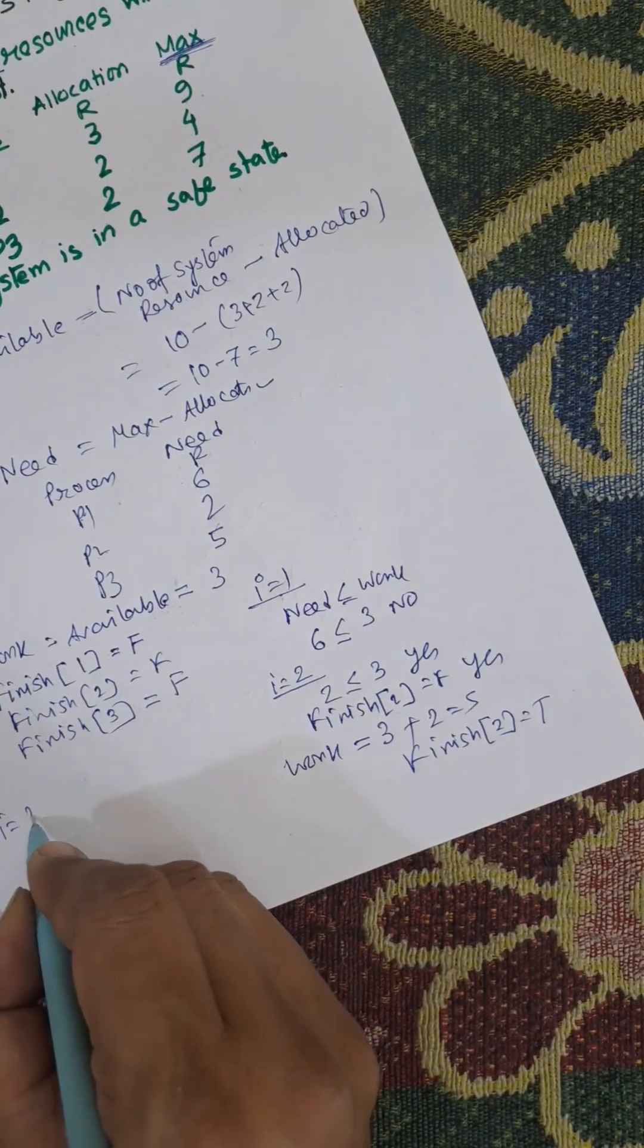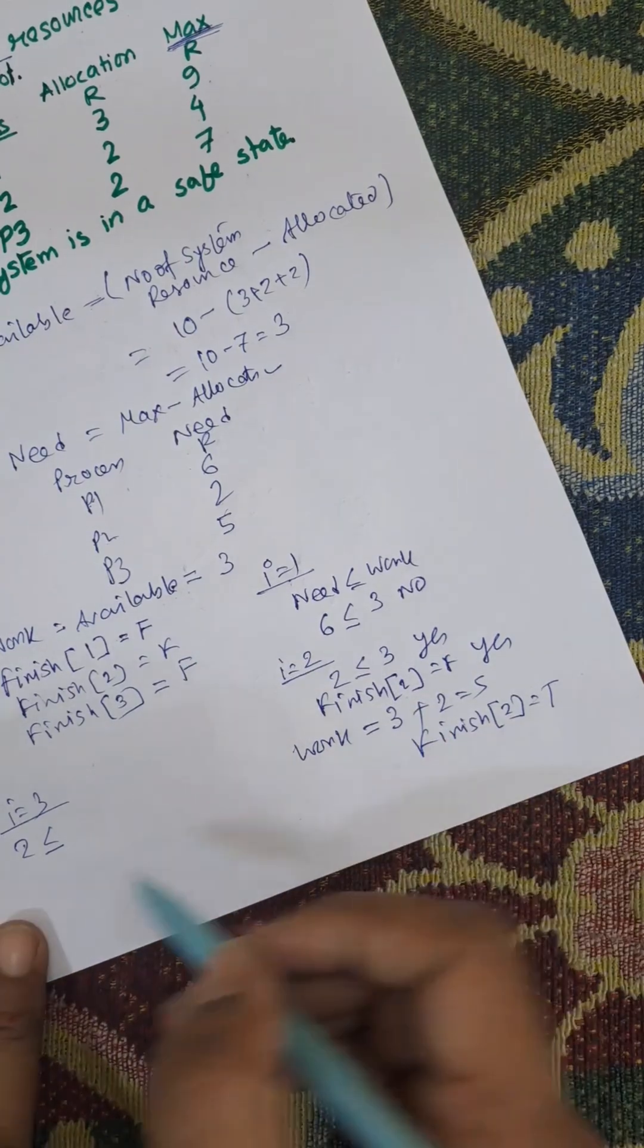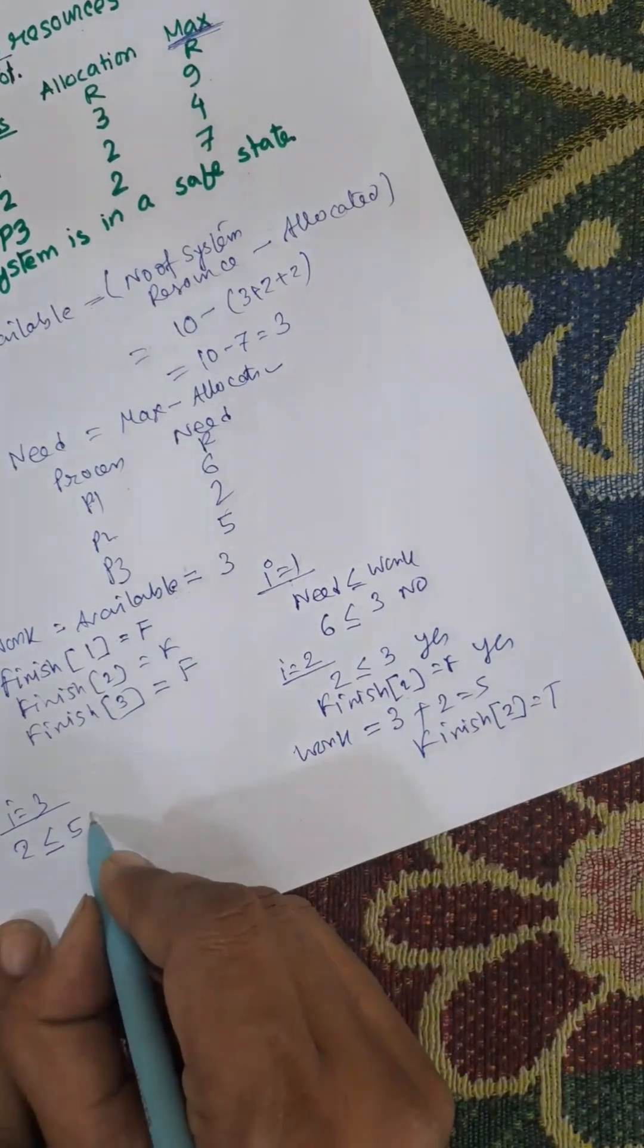Now when i equals 3, again need is 2. 2 less than or equal to work. Yes, 5. 2 less than 5. Yes.